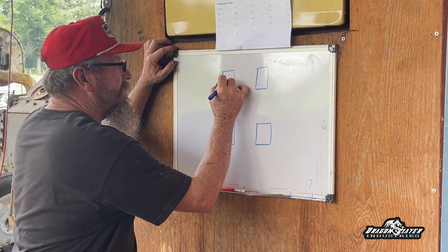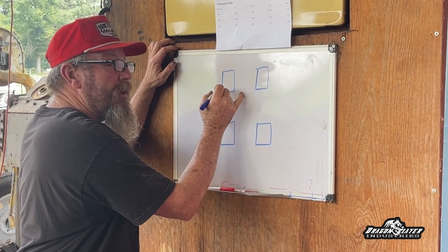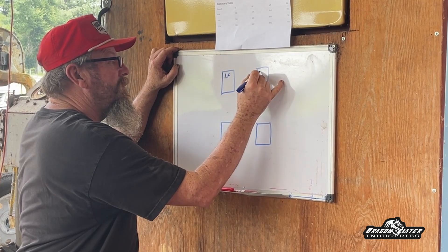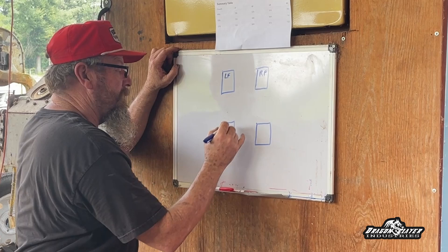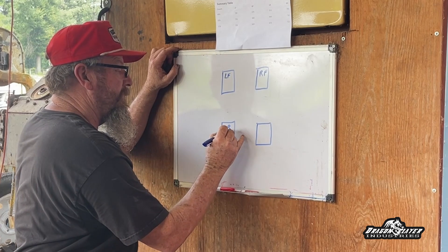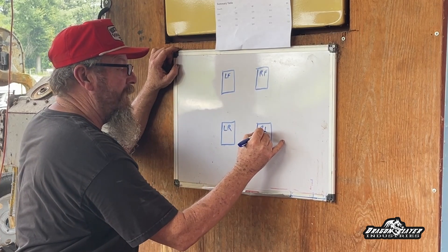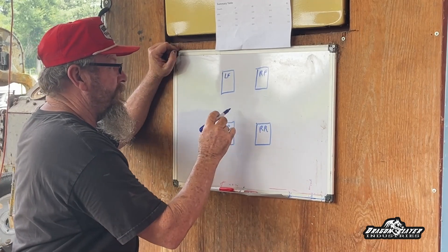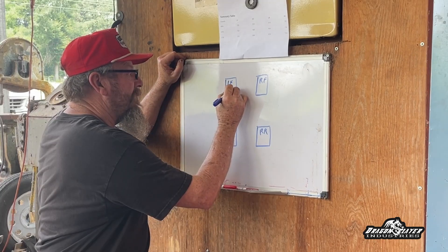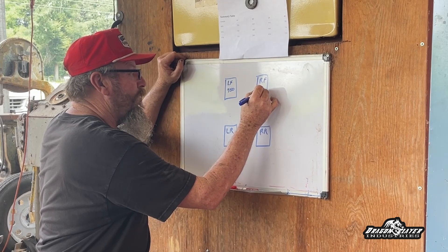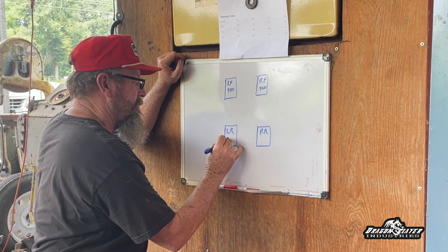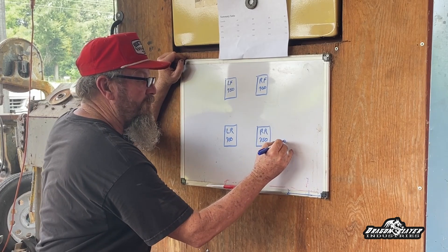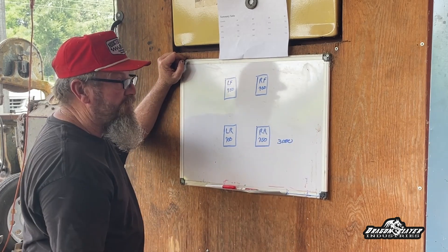In a real basic example, say our car just weighs 3,000 pounds. This is your left front, right front, left rear, right rear tires looking at the car looking down at it. We're going to weigh 750 pounds on all four tires, and that's going to give us a 3,000 pound car and that's what we'll use throughout the video here.